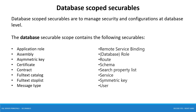Database scope Securables are used to manage security and configurations at the database level. Database scope Securables contain the following: application roles, assembly, asymmetric key, certificate, contract, full-text catalog, full-text stop list, message type, remote service binding, database roles, route, schema, search property list, service, symmetric key, and user.